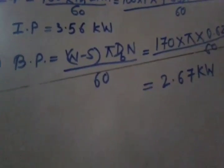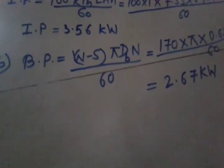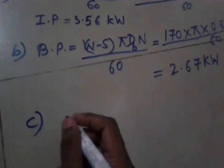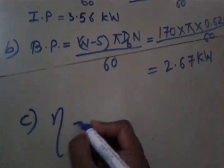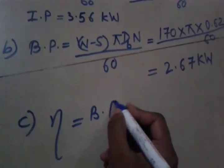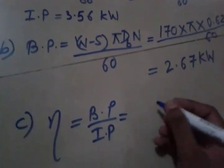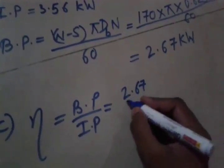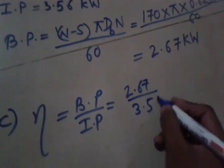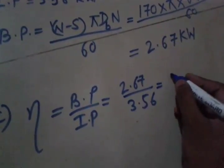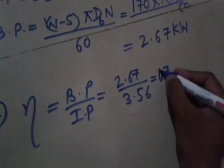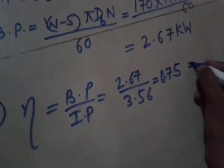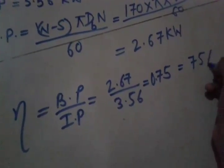Now the third thing which we need to calculate is mechanical efficiency. Mechanical efficiency will be brake power upon indicated power so 2.67 divided by 3.56 and we will get it as 0.75 that is equal to 75 percentage.